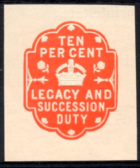Gross receipts taxes are levied on all sales of a business. They have been criticized for their cascading or pyramiding effect, in which an item is taxed more than once as it makes its way from production to final retail sale. Excise taxes are applied to a narrow range of products, such as gasoline or alcohol, and are usually imposed on the producer or wholesaler rather than on the retail seller.